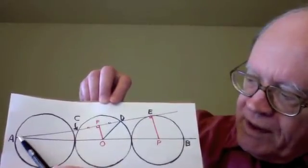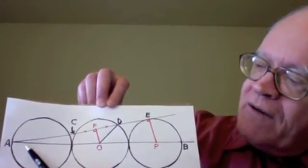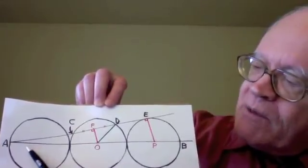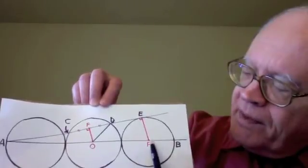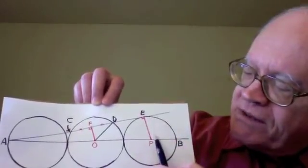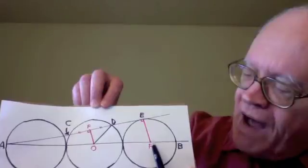So, in triangle APE, we have side AP, which is 5 radii. That's a length of 5. And PE, a radius. That's a length of 1, or 5 fifths.